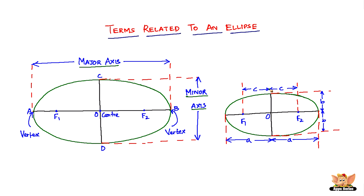Here we have another diagram in which the green curve is the ellipse — a smaller version. In this diagram, we are going to mainly look into the distances of the major axis, the minor axis, and the distance between the foci. The distance between the center and each focus is C, so the distances of the foci from the center are equal. Therefore the length between F1 and F2 is 2C.